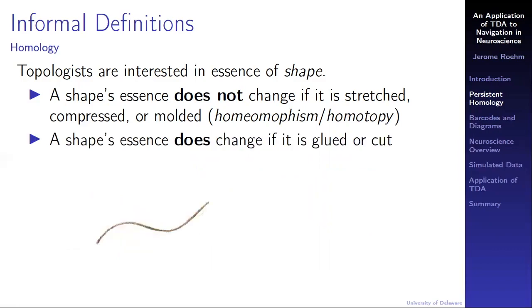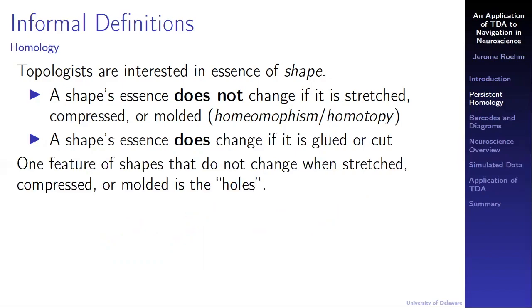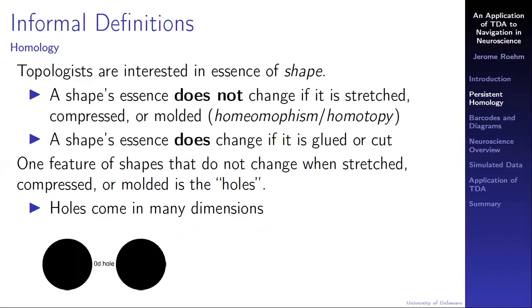A shape's essence does change if it is glued or cut. For example, if we start with the string pictured on the left and we tie it or glue it into a loop, this is fundamentally and essentially a different shape. It has a different essence of shape than an untied string does. A feature of shapes that does not change when they are stretched, compressed, or molded is the holes in the shape. Holes come in many dimensions. A zero-dimensional hole is a connected component. A one-dimensional hole is like the inside of a circle. It's a captured disk. A two-dimensional hole is the inside of a sphere. We say it is a captured void.